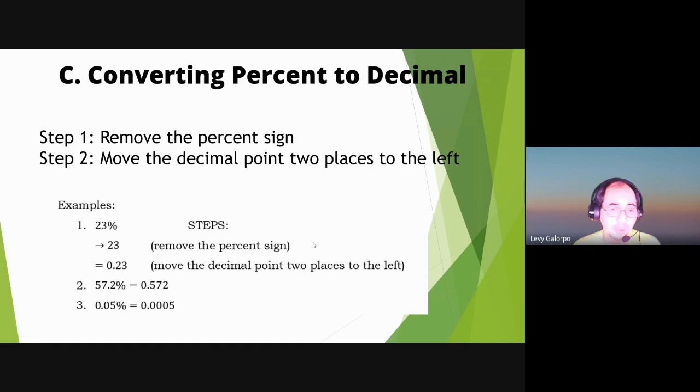So example number two, 57.2%, ganun din. Move the decimal point to the left. Therefore, magiging 0.572. And yung 0.05%, ganun din. Lipat natin pakaliwa dalawang beses. Therefore, yung 0.05% magiging 0.0005. Nakuha ba natin class?